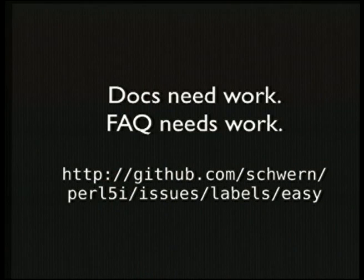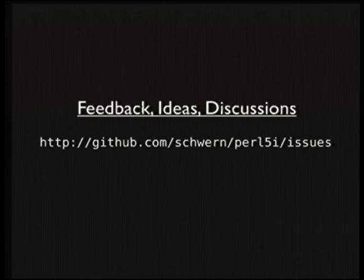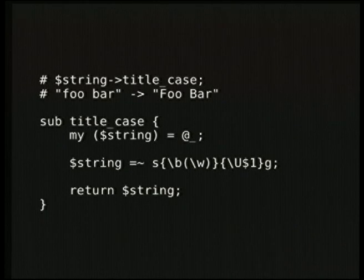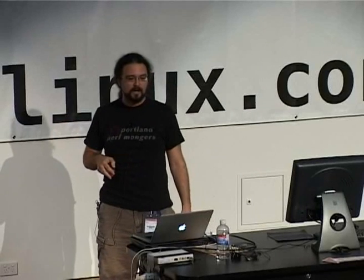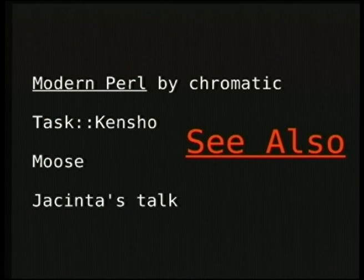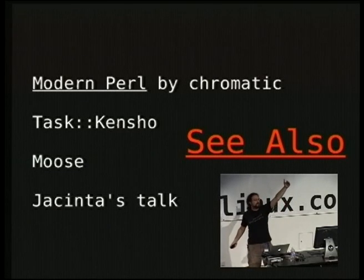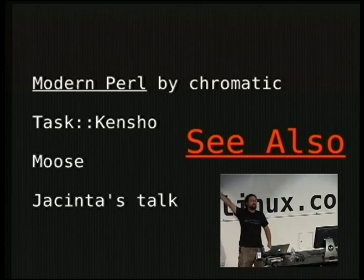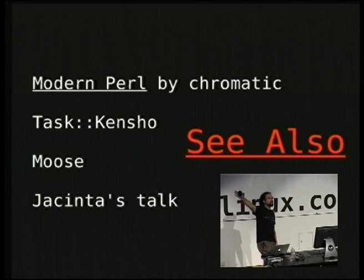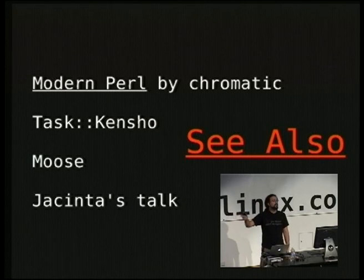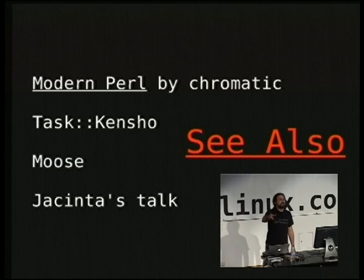There are docs and FAQs. There are discussions — we kind of live in the issue tracker. Working on it is not scary despite the idea, especially adding new methods. It's just like writing any other function — if you want to write something to turn a string into title case, it's normal Perl. I take care of all the scary stuff. There's now finally a book about how Perl programmers actually write Perl in the 21st century called Modern Perl — it's free, or you can buy it in dead tree by Chromatic. There's a module called Task::Kensho that has a huge list of good Perl modules to have. I haven't talked about Moose — it's the new object system derived from Perl 6, does everything and more, it's a postmodern object system. And Jacinta is talking Thursday about Modern Perl best practice techniques.